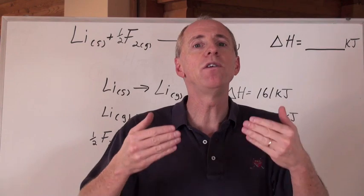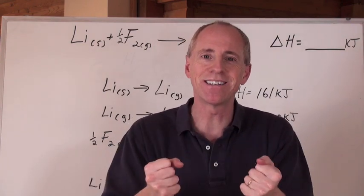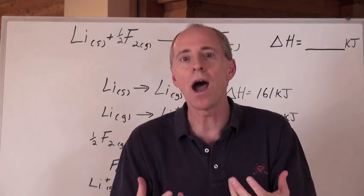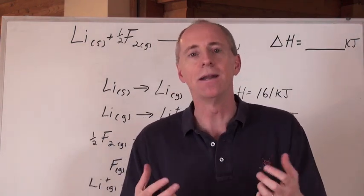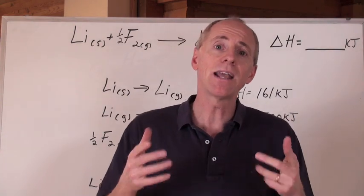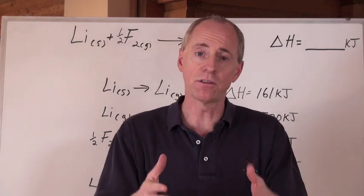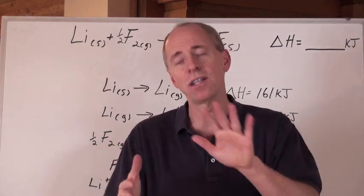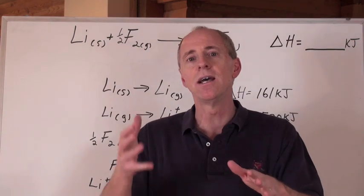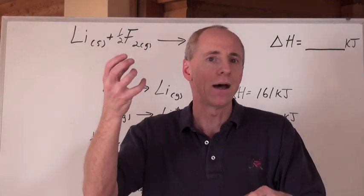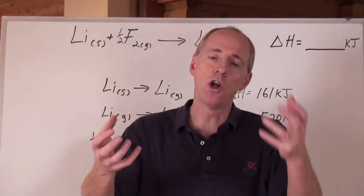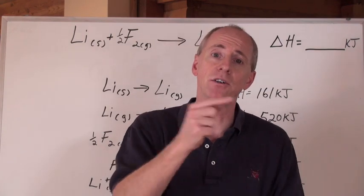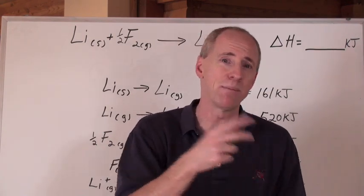How can we figure out how much energy is possessed in a chemical bond? How can we describe that? Let's take ionic compounds and the formation of ionic compounds — very simple, where we just take a metal and a non-metal and put them together and form something called a binary ionic compound.